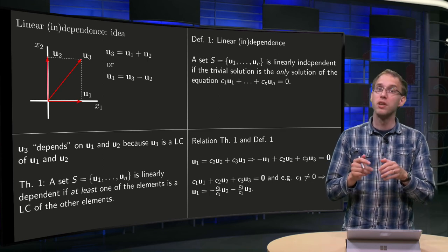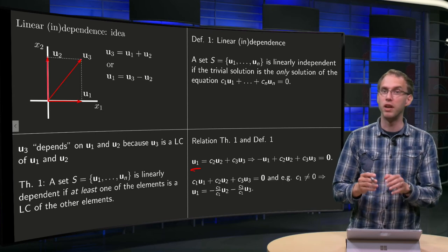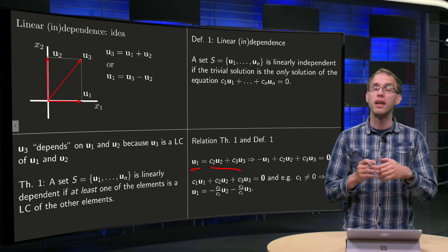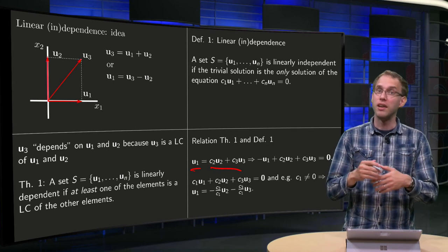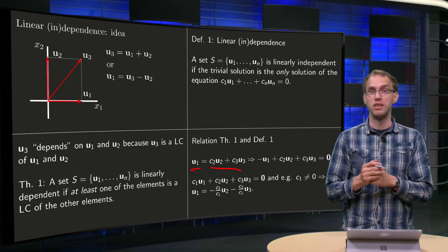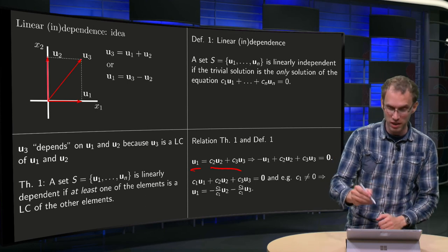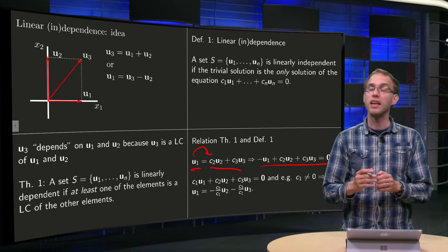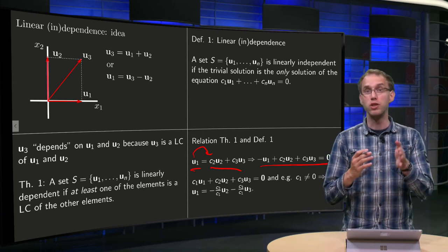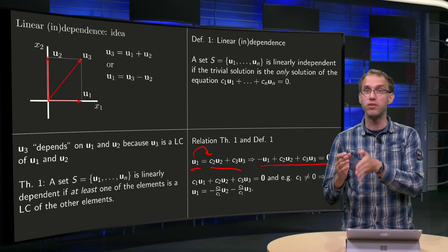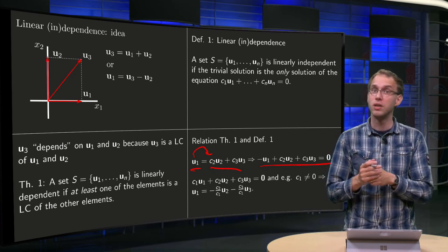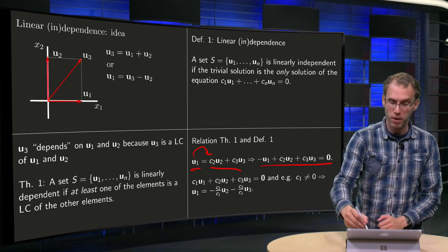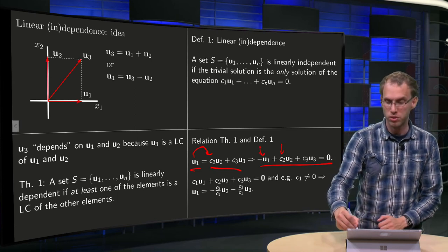Well, suppose one vector say u1 is a linear combination of two other vectors, so we have a set of three vectors. Then we can see that this is the case, then the theorem also tells us that the set is dependent. Well, why is that? You can bring the u1 to the other side and then we have this equation over here. And then we see that the equation c1 u1 plus c2 u2 plus c3 u3 equals 0 also has a non-trivial solution because you can put c1 to minus 1 and then you have to choose c2 and c3.